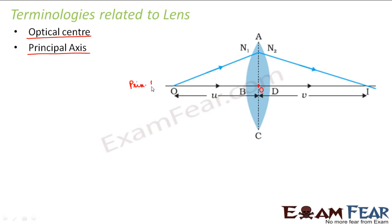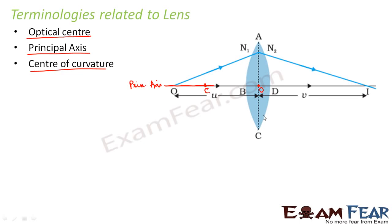Since a lens has two spherical surfaces, it has two centers of curvature — one for each surface. We call them C1 and C2. The corresponding radii of curvature are known as R1 and R2 respectively.